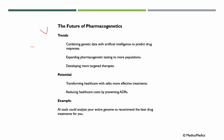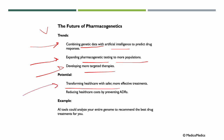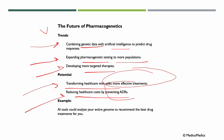Looking to the future, upcoming trends include combining genetic data with AI to predict drug responses, expanding pharmacogenetic testing to more populations, and developing more targeted therapies. The potential includes transforming healthcare with safer, more effective treatments and reducing healthcare costs by preventing adverse drug reactions. For example, AI tools could be used to analyze your entire genome to recommend the best drug treatment for you.